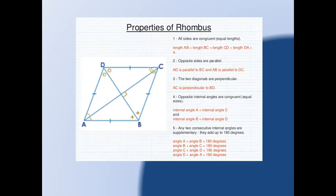Fourth, opposite internal angles are congruent: angle A equals angle C, and angle B equals angle D. Fifth, any two consecutive interior angles are supplementary, meaning their sum equals 180 degrees: angle A plus angle B equals 180 degrees, and similarly angle B plus angle C, angle C plus angle D, and angle D plus angle A each equal 180 degrees.